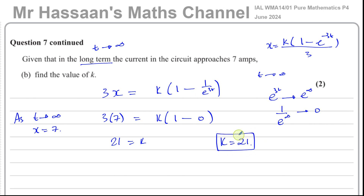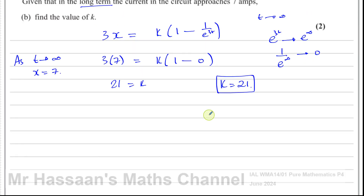So k equals 21. When it says 'in the long term,' time becomes really large, making 1 over e to the power of a huge number approach 0. So the bracket approaches 1, giving k times 1 equals 21. That's how we approach such a question.